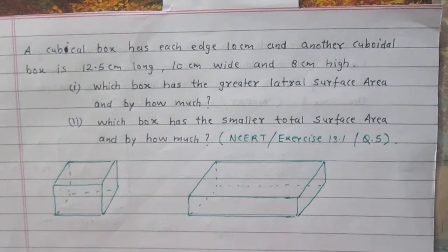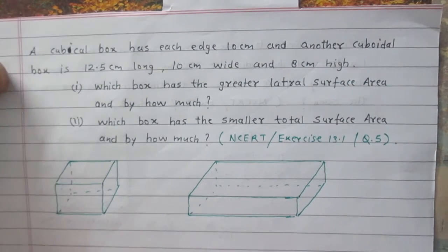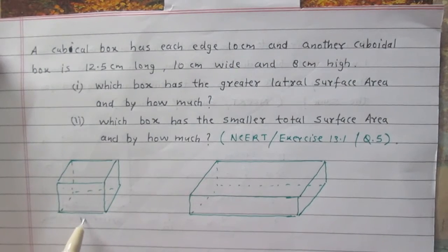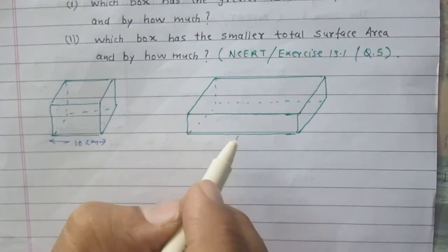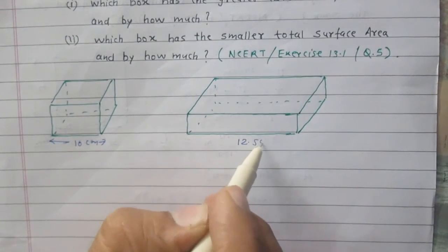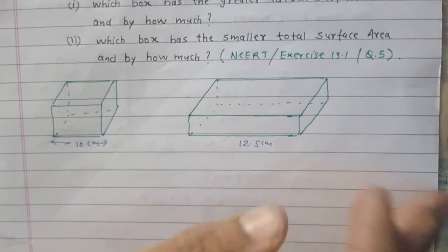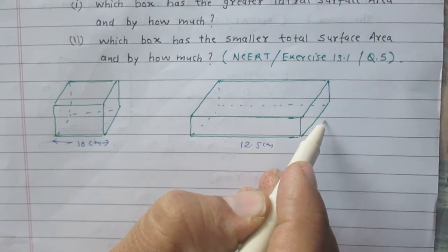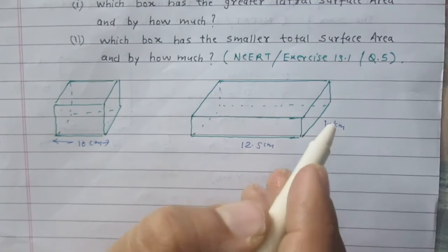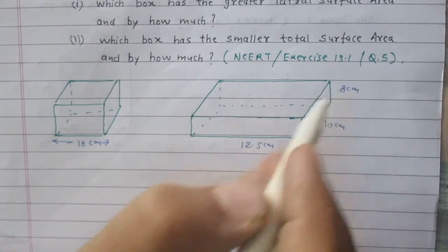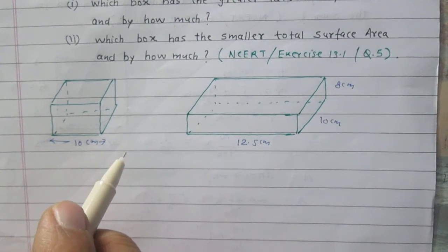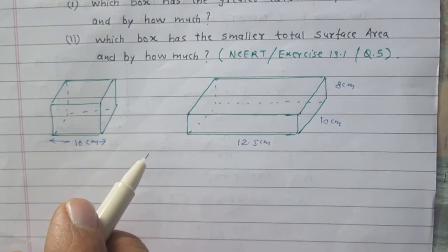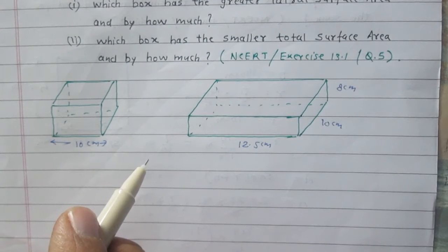We are given two solids. One is a cube and the other is a cuboid. The edge of the cube is 10 cm. The length of the cuboid is 12.5 cm, the breadth is 10 cm, and height is 8 cm. We are to find their lateral surface areas and their total surface areas and we are to compare them.